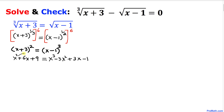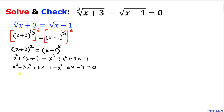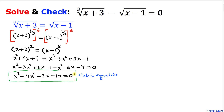Expanding the right hand side gives us x cubed minus 3x squared plus 3x minus 1. Now let's move all terms to the right hand side, giving us negative x squared minus 6x minus 9, and setting it equal to zero. Combining like terms, we get x cubed minus 4x squared minus 3x minus 10 equal to zero.